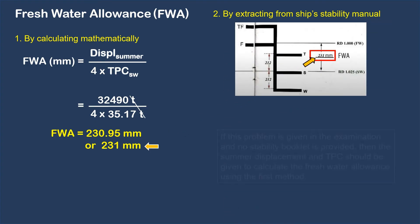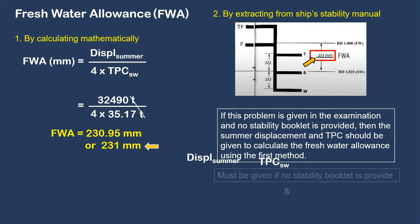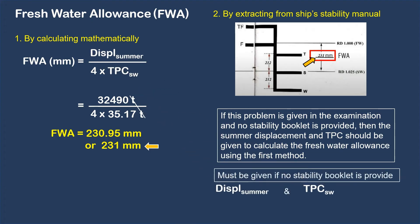If this problem is given in an examination and no stability booklet is provided, then the summer displacement and TPC should be given to calculate the freshwater allowance using the first method.